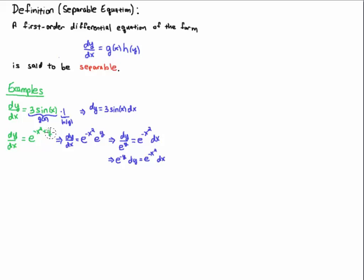But remember, if I have a sum of exponents and they have the same base, I can write that as a product of powers with the same base. So e to the minus x squared times e to the y is e to the minus x squared plus y.